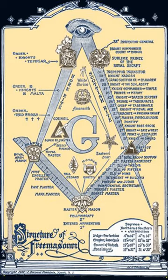In Canada there are two main Masonic Appendant Bodies. The York Rite, being the older of the two, aside from the Craft Lodge, comprises four separate and distinct bodies: the Royal Arch Chapter, the Council of Royal and Select Masters, the Commandery of the Knights Templar, and the York Rite College. The York Rite also includes Priories of Knights of the York Cross of Honour, Tabernacles of the Holy Royal Arch Knight Templar Priests and Order of Holy Wisdom, and Councils of the Allied Masonic Degrees of Canada. The Ancient and Accepted Scottish Rite of Freemasonry.